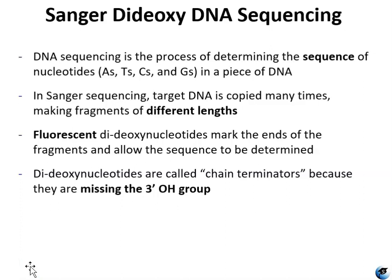While PCR is great for making more DNA, it can't tell you the actual nucleotide bases contained in the DNA or the order in which those nucleotides appear. So if you need to know the sequence of the DNA, you're going to need to perform a sequencing technique. This particular sequencing technique, Sanger dideoxynucleotide sequencing, is also called the chain termination method. It was developed by Frederick Sanger in 1972.